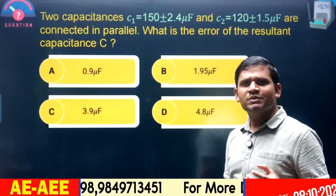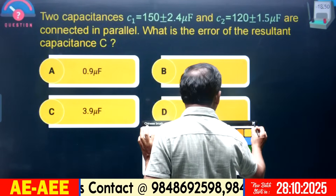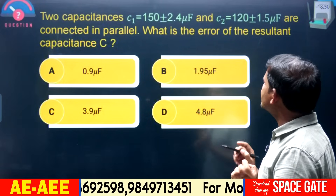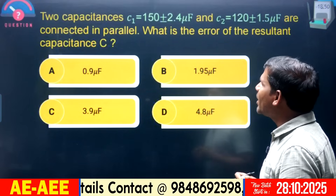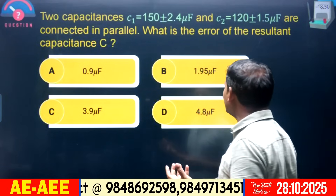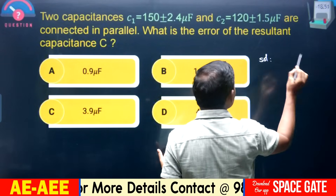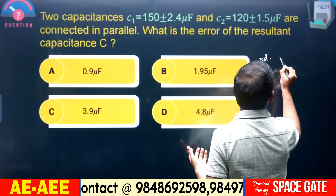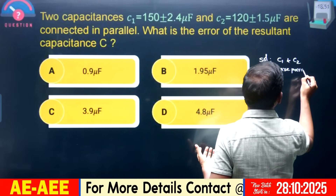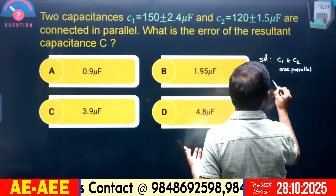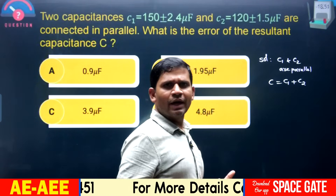This question is also based on error propagation. Two capacitances C1 and C2 are connected in parallel. What is the error of the resultant capacitance C? When capacitances are connected in parallel, capacitances are added directly — unlike resistors in parallel.